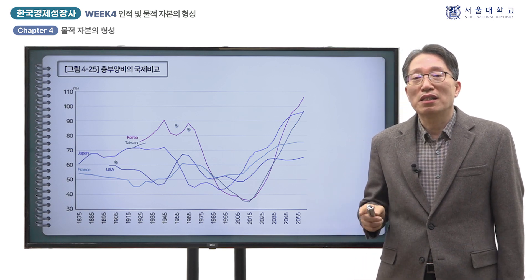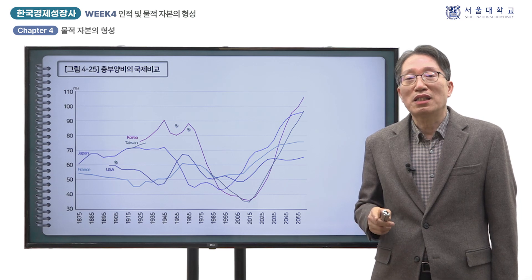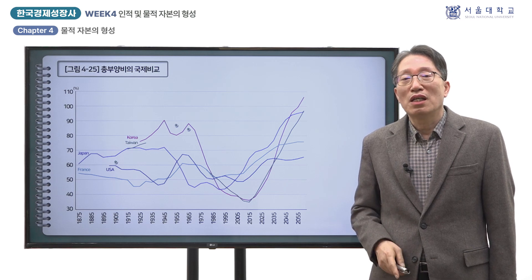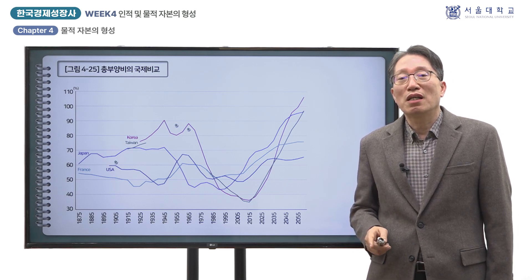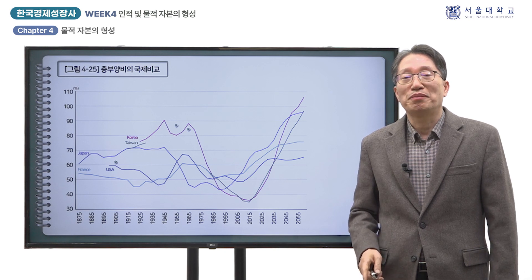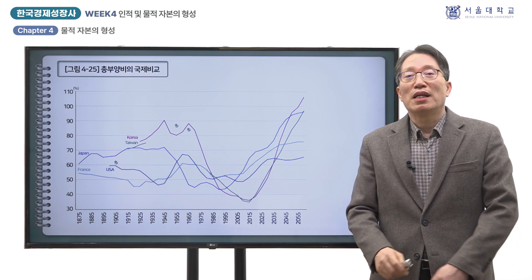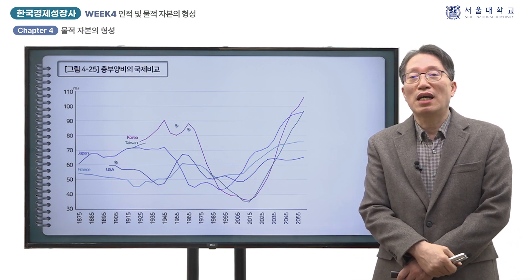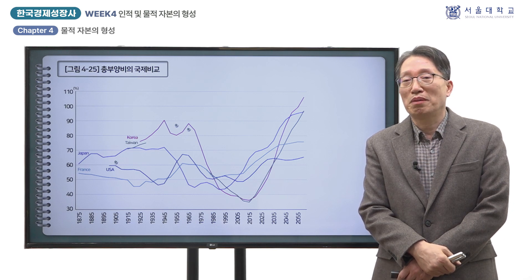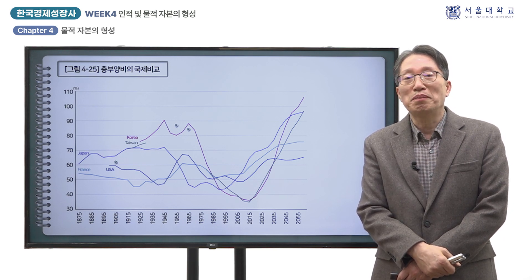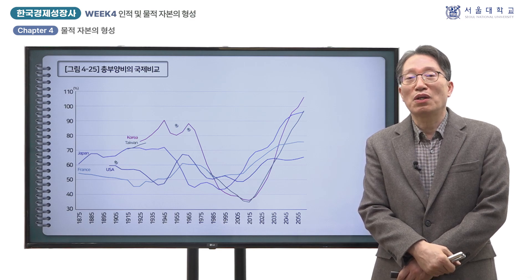그런 의미에서 물적 자본과 인적 자본의 형성은 출산율 하락을 매개로 긴밀히 연결되어 있었다고 할 수 있습니다. 지금까지 한국경제성장사 네 번째 강의로 인적 및 물적 자본의 형성에 관해 살펴보았습니다. 다섯 번째 강의에서는 생활수준과 불평등이라는 주제로 진행합니다. 감사합니다.